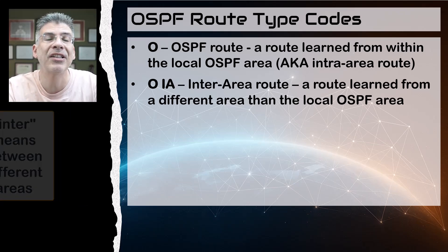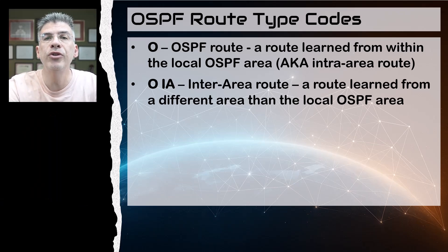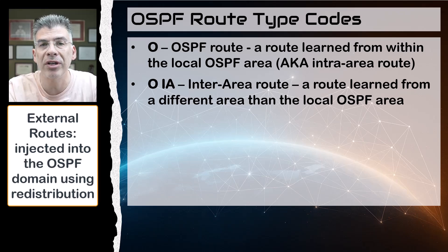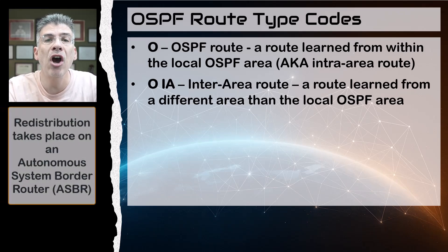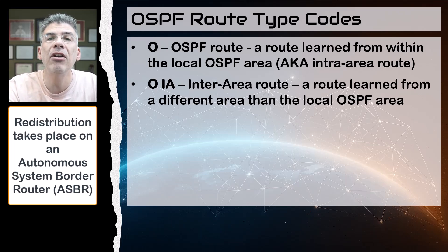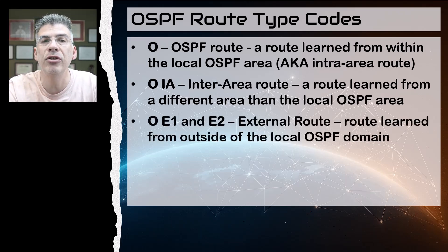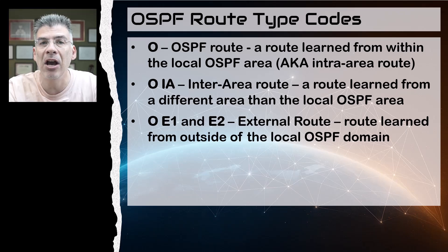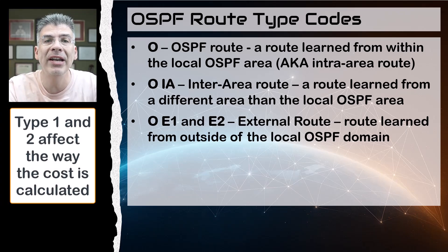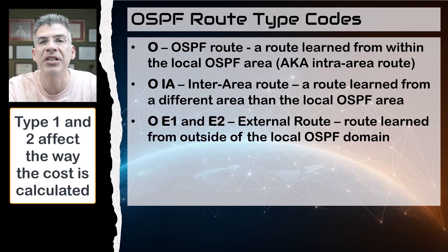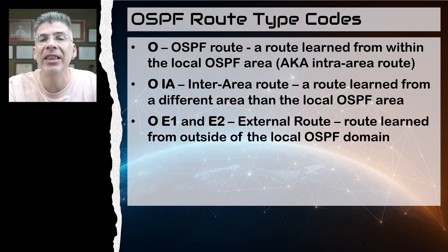Next we have four different types of external routes. External routes are those that have been injected into OSPF using redistribution of some sort somewhere on the network. This is achieved on an ASBR router. Because there are several types of external routes, they are indicated by various codes. First we have the OE1 and OE2 codes — both are external routes injected into OSPF on an ASBR. The difference between type 1 and type 2 has to do with how we calculate the metric to reach each of those particular destinations.